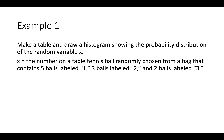Here's an example where we have to determine things about a probability distribution. Make a table and draw a histogram showing the probability distribution of the random variable x, where x is the number on a table tennis ball randomly chosen from a bag containing 5 balls labeled 1, 3 balls labeled 2, and 2 balls labeled 3. The table will also contain a row called outcomes, which shows how many different ways that outcome can occur.